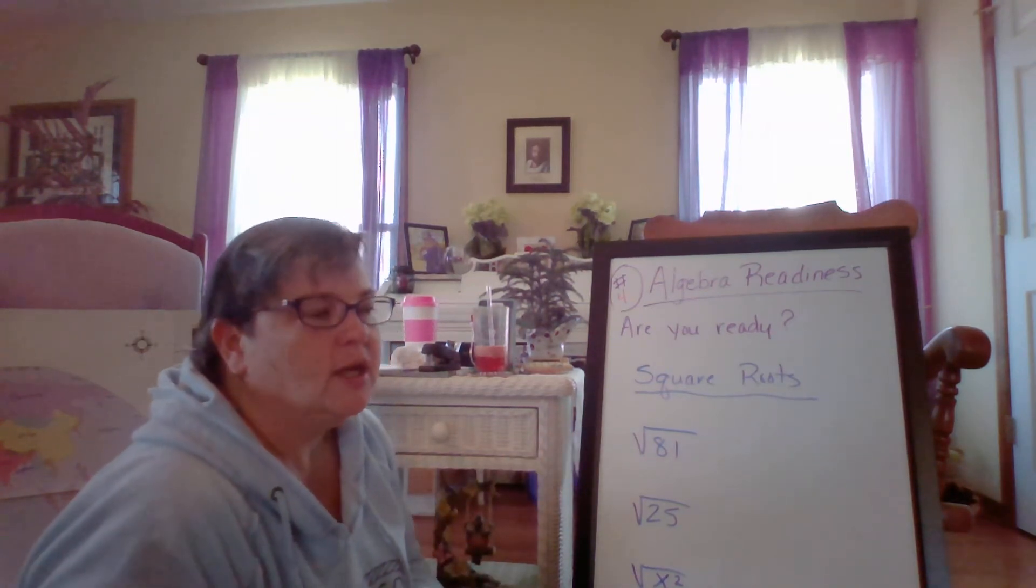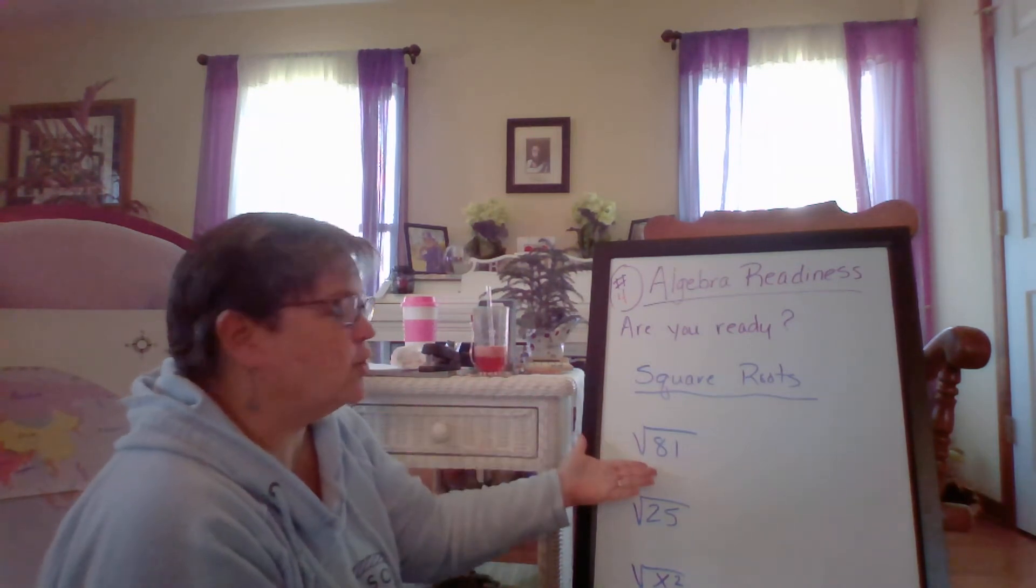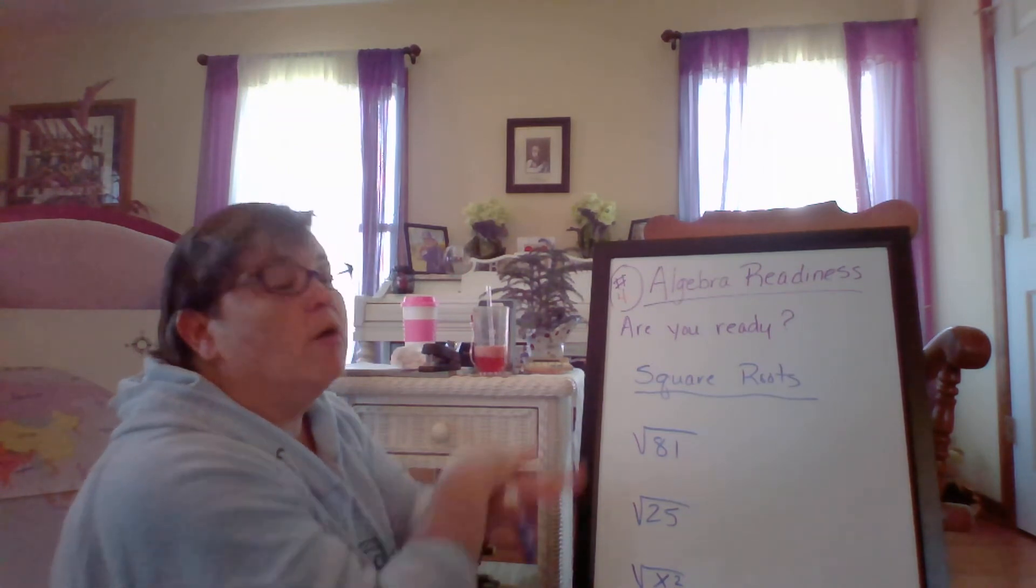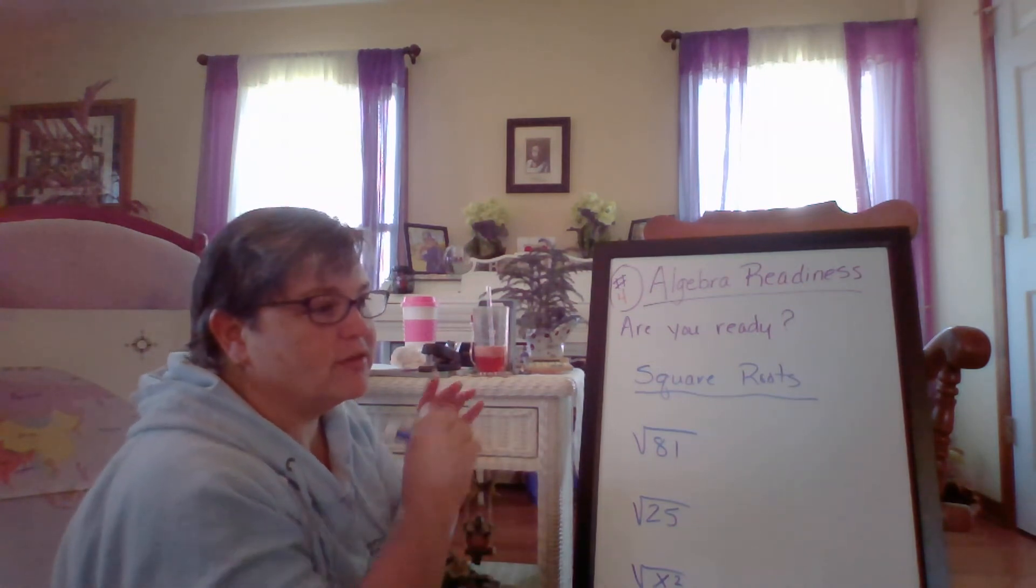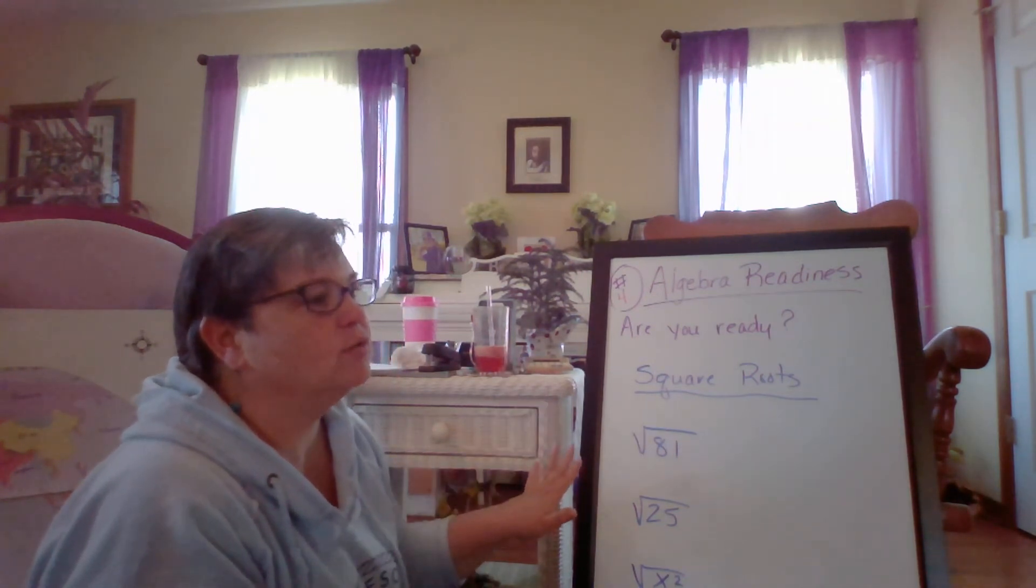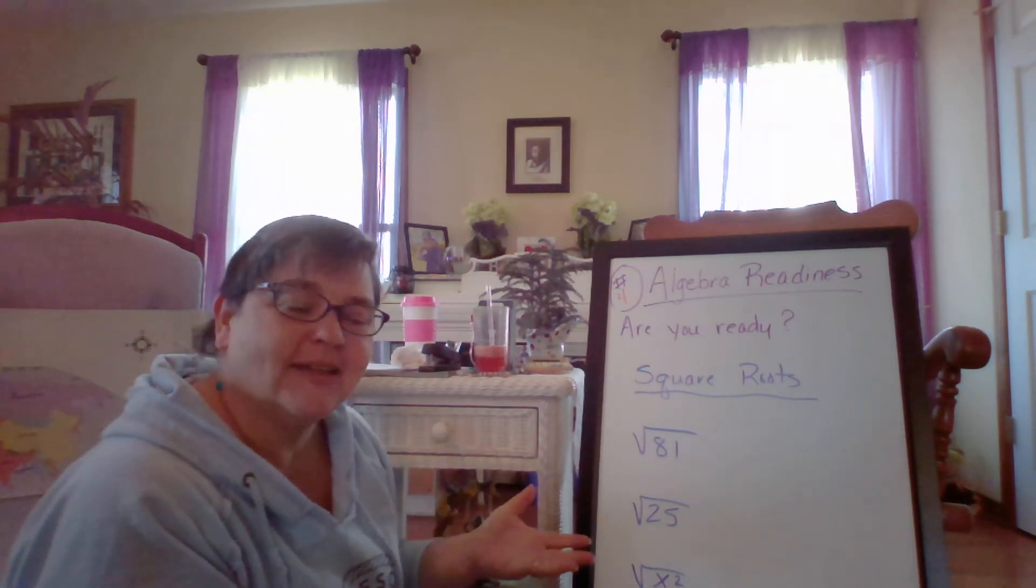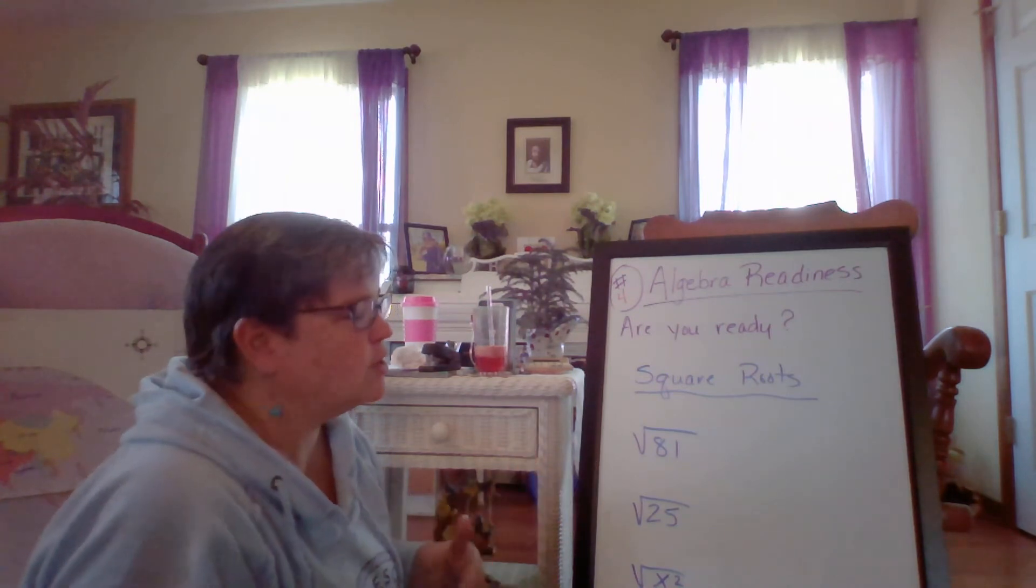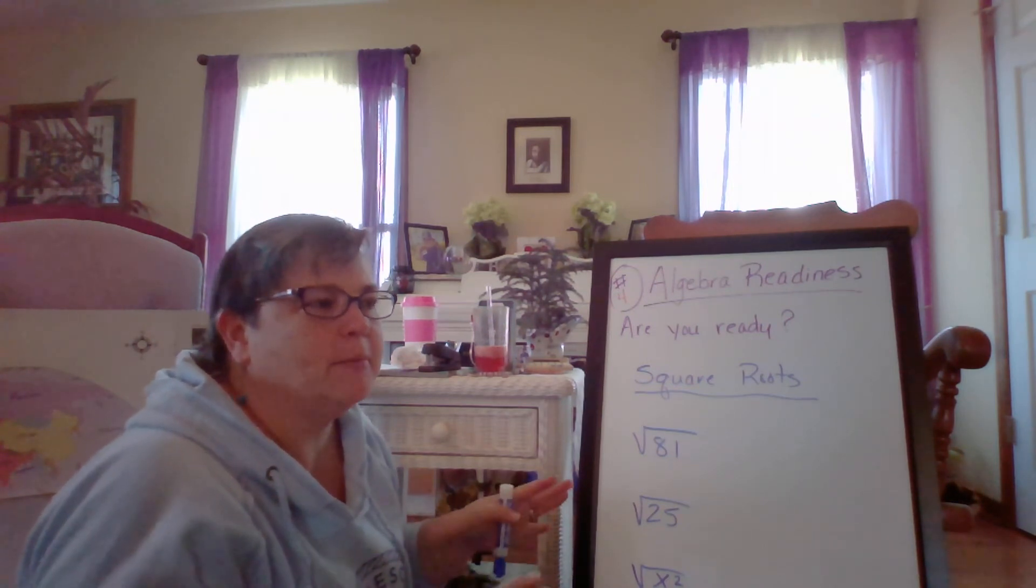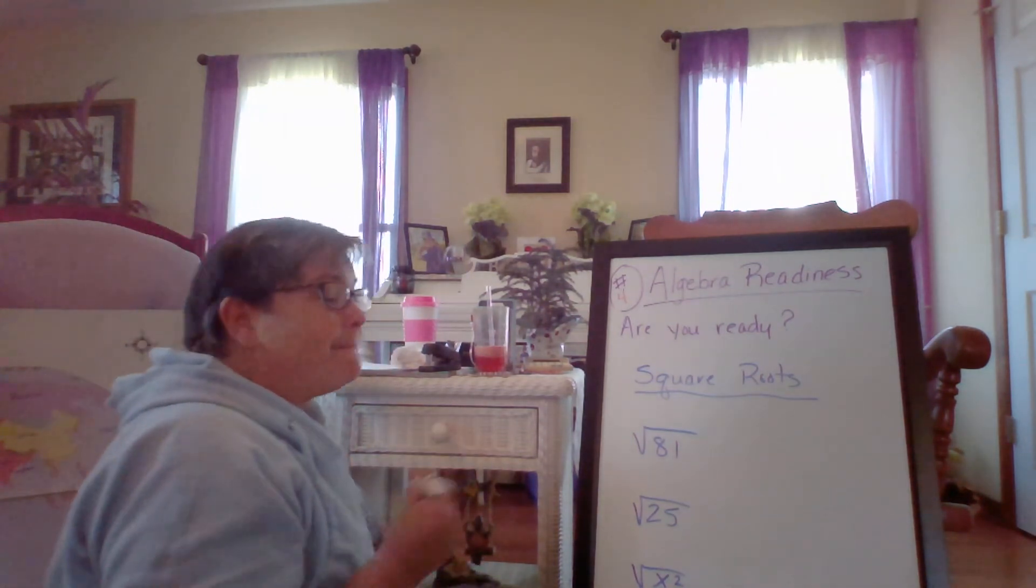When you have to find the square root of something, what you're looking for is two exact numbers, when multiplied, equal the number under the square root. And I could explain this mathematically with squares and lots of geometry, and I'm going to save that till geometry. Because right now I just want you to know how to find it, and later on we'll explain it. Sometimes we do math backwards. So they want you to know what a square root is. They're really not giving you any explanation as to what that means, but when we get to geometry, we will find out what it means.